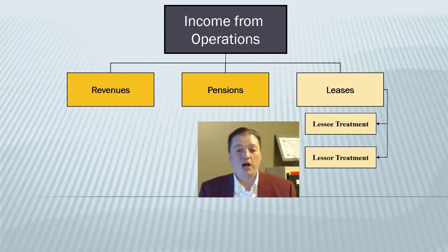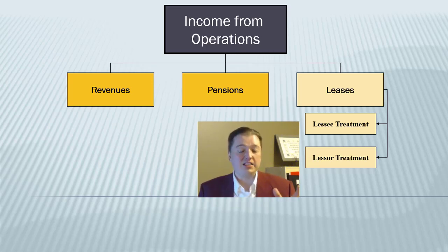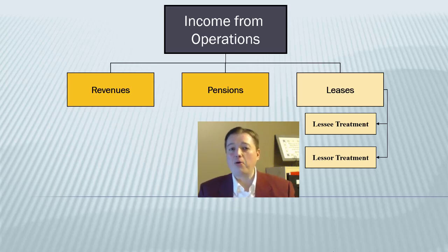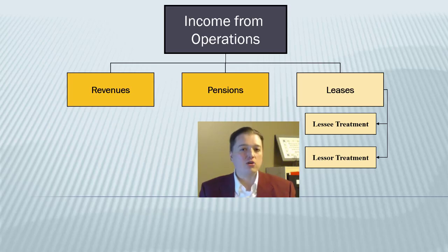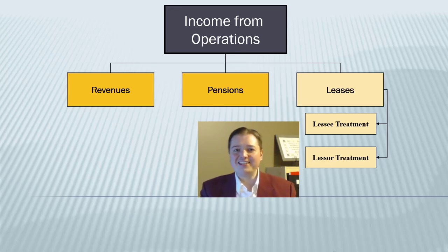One of the rules, for example, was if you pay 90% of the market value of the asset over the life of the lease, then you have to capitalize it because you've essentially bought it — at least that was FASB's logic. So what companies would do is work with the lessor and get up to like 89.9% of the market value, and then they hadn't quite crossed the threshold and they could still call it an operating lease.